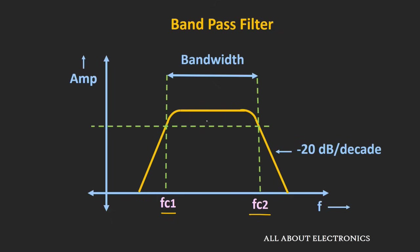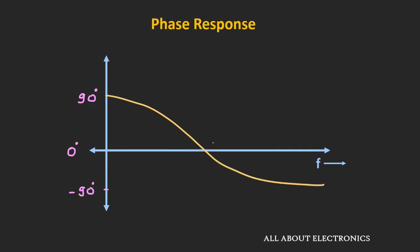For this frequency response, the center frequency will be located at the geometric mean of the two cut-off frequencies. If we see the phase response of this bandpass filter, at zero frequency the output will lead the input by 90 degrees. As we move toward the center frequency, the phase difference will gradually reduce. When we start moving away from the center frequency, the output will start lagging the input signal, and at f equal to infinity, the output will lag the input by 90 degrees.